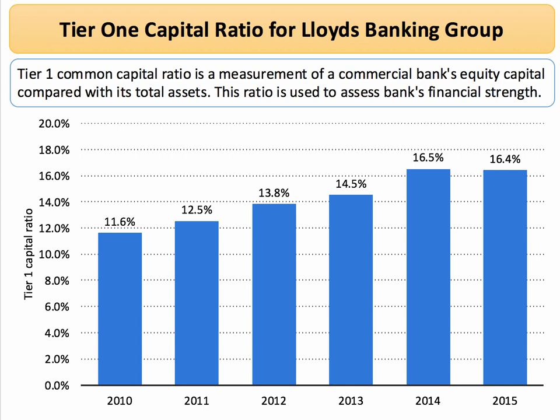Here's an example to finish with. This is for Lloyds Banking Group — their tier one common capital ratio, which is the amount of equity capital the bank has, effectively share capital, compared to its other assets, including loans they've issued. You can see that over the last five or six years, Lloyds has increased its tier one capital ratio. UK banks are required to hold a minimum 7% tier one capital ratio, and Lloyds is well ahead of that.